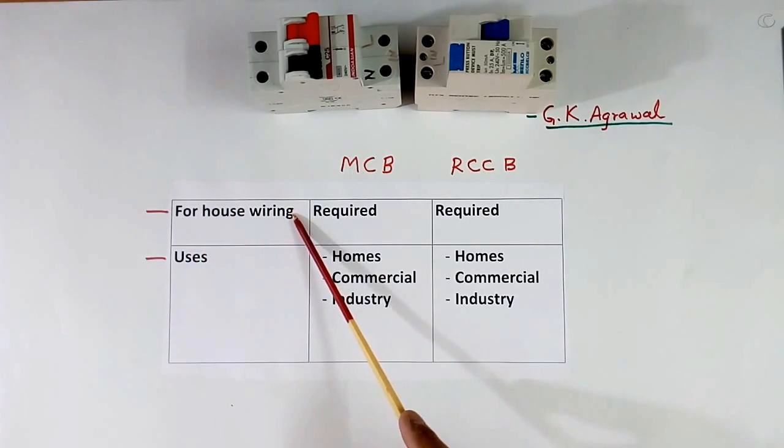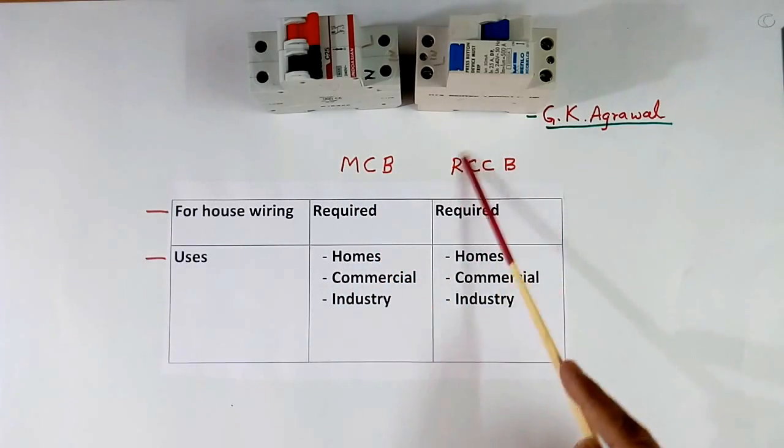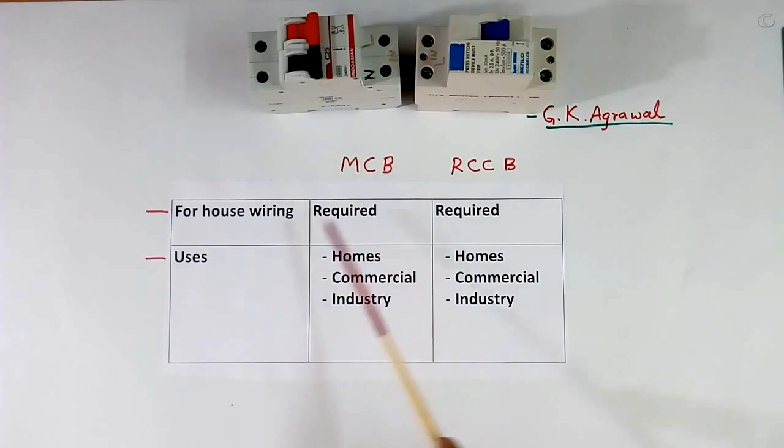For house wiring, MCB is required, RCCB also required. Both are connected in house wiring.